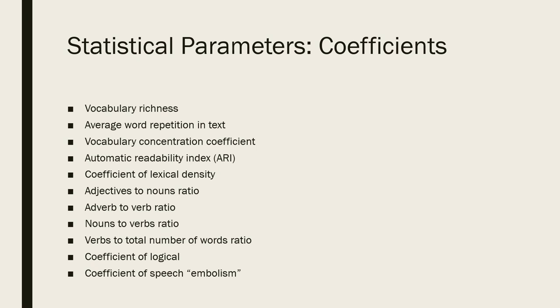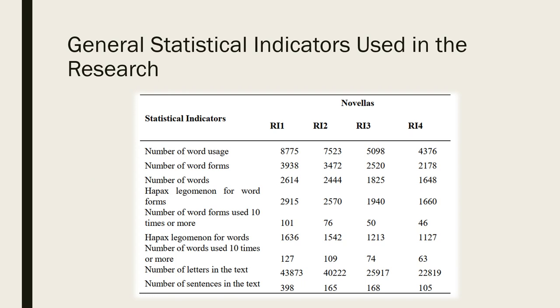For the general statistical research of the above-mentioned novellas, the following coefficients were calculated: vocabulary richness, average word repetition in text, vocabulary concentration coefficient, automatic readability index, coefficient of lexical density, adjectives to nouns ratio, adverb to verbs ratio, nouns to verbs ratio, verbs to total number of words ratio, coefficient of logical, coefficient of speech embolism.